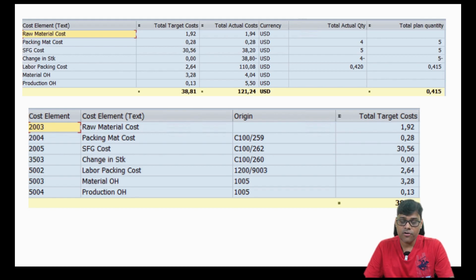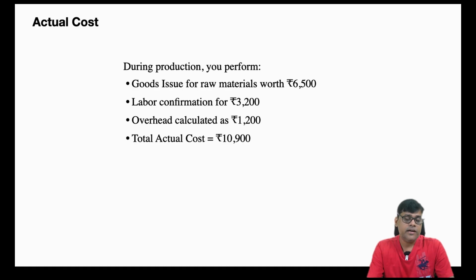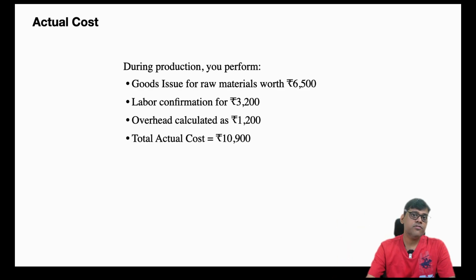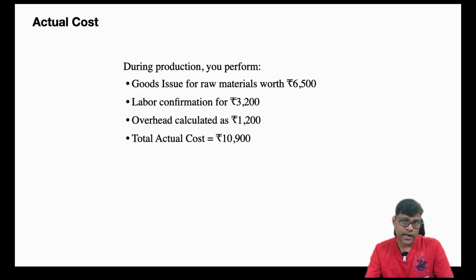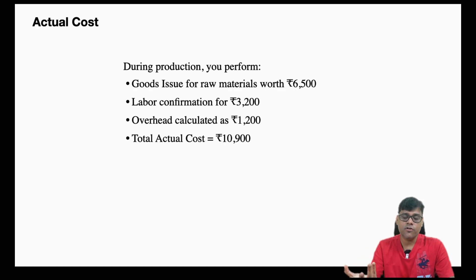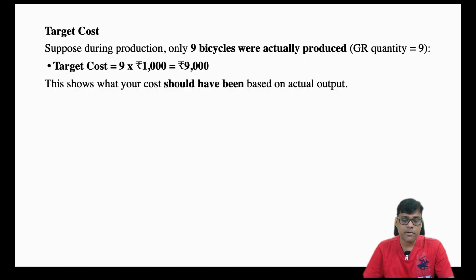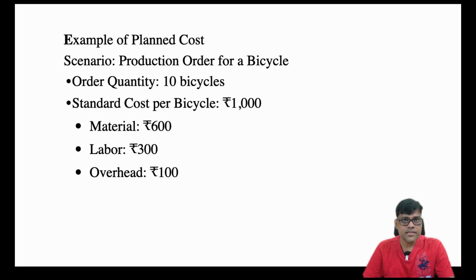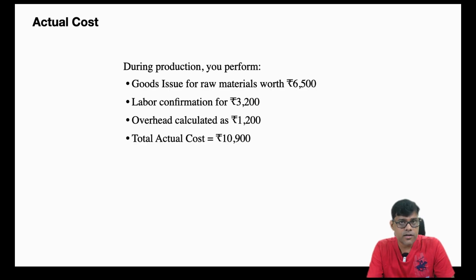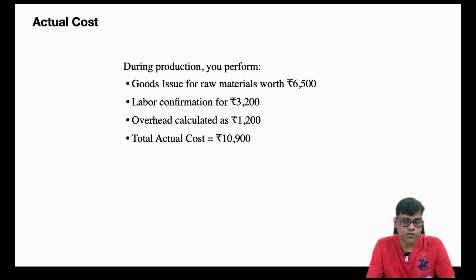Now coming to actual cost — the most important one, because here we use actual data. This cost is calculated when actual production happens. Planned cost was for planning purposes; target cost uses actual quantities with planned values; actual cost is calculated when we issue the goods. In the planned cost, material was 600, but the actual material cost is 6500 — because when manufacturing starts, we capture actual data.